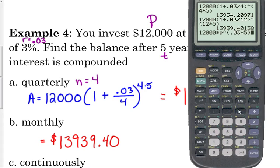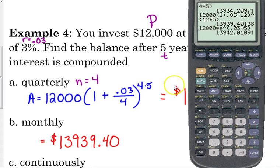And then, finally, if it's compounded continuously, it's P, the principal, times E to the RT. Not as many pieces there. And we make $13,942.01. So, that makes you a little bit more than the other compounding.